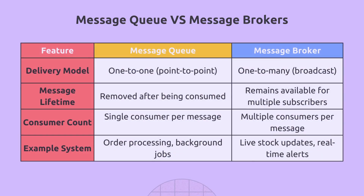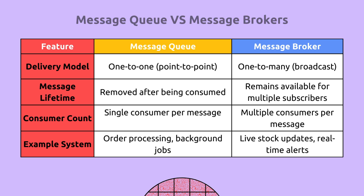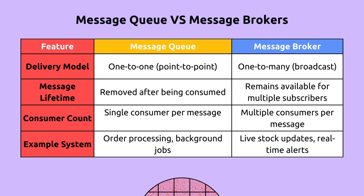Key differences between message queues and message brokers: First, the delivery model — message queues work on one-to-one (point-to-point) communication, while pub-sub is one-to-many broadcasting. Second, message lifetime — messages are removed once consumed in message queues, but remain available for multiple subscribers in pub-sub. Third, consumer count — a single consumer per message in message queues vs. multiple consumers per message in message brokers. Example use cases: order processing for queues; live stock updates or real-time alerts for brokers.